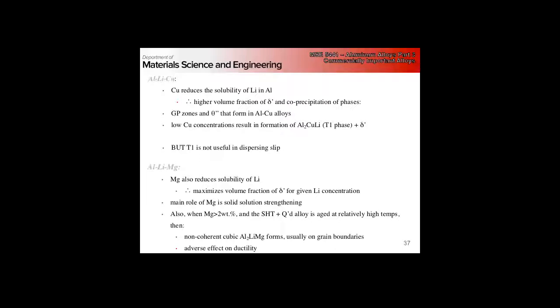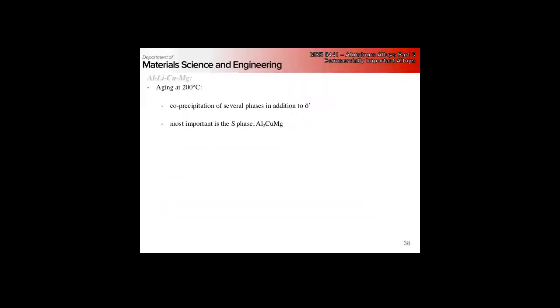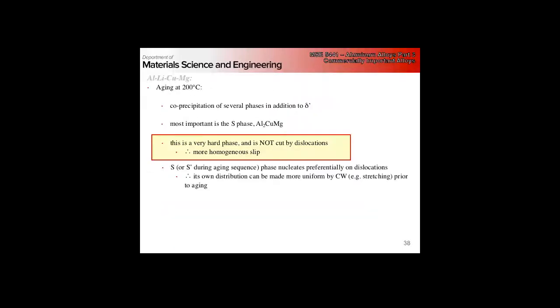At low copper concentrations, we get this intermetallic T1 phase plus the delta five, but this is not particularly useful in dispersing slip, so we need to go to slightly higher copper concentrations. Aluminum, lithium, magnesium also reduces the solubility of lithium. These alloy families allow us to maximize the volume fraction of our reinforcing phase for a given concentration of lithium.